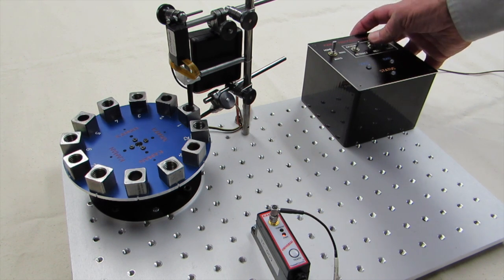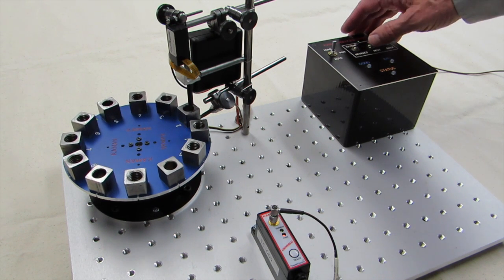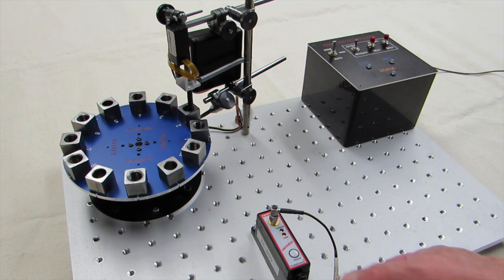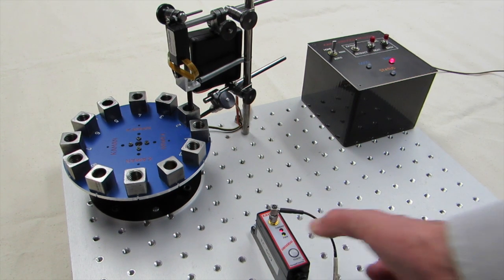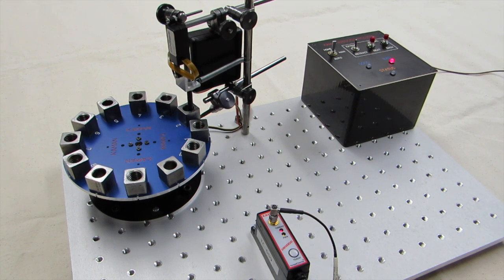Then we'll insert the probe into a sample of an unthreaded part. We'll press the Teach button again, and the ThreadChecker is completely calibrated and ready to use.